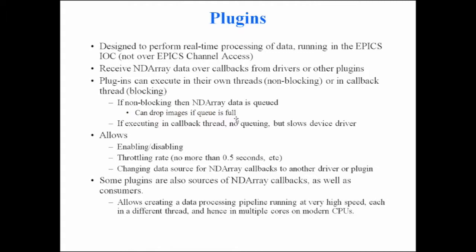You can throttle the rate so that even if your detector produces 300 images per second, you don't need ImageJ to display 300 fps — you can throttle the plugin producing EPICS waveform data to only run at 10 Hz, saving network bandwidth and CPU cycles. You can also change dynamically at runtime where the data for that plugin comes from — switching from getting data from the driver to getting it from another plugin.